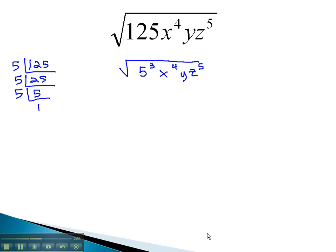Now we're ready to take the square root of what we can. Square root implies an index of 2, so we will divide each of the exponents by 2.